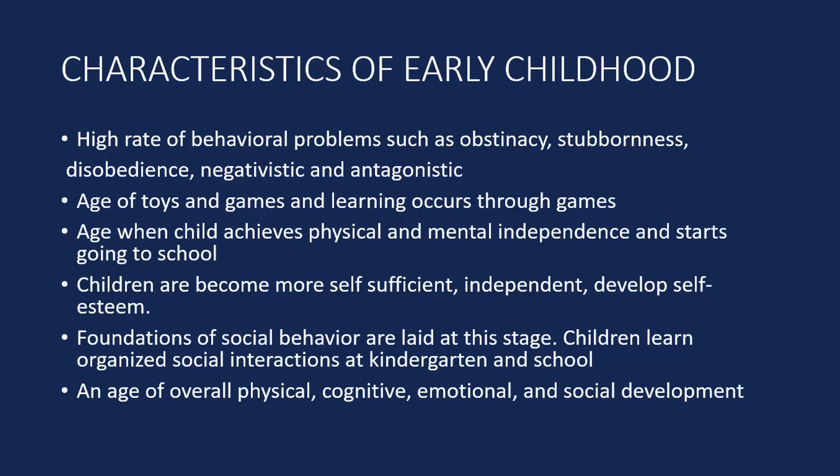The third characteristic is that during this stage a child achieves a lot of physical and mental independence, partly because the child starts going to school. The fourth point is that children become more self-sufficient and develop self-esteem. The fifth is that the foundations of social behavior are laid at this stage — children learn how to engage in organized social interactions, follow rules, and behave in an organized setting. Overall, a child's physical, cognitive, emotional, and social development occurs during early childhood.